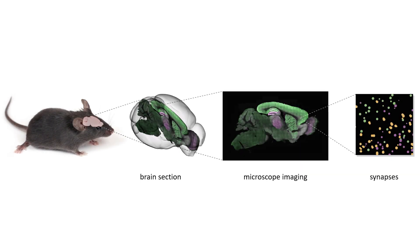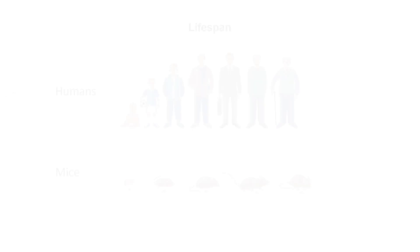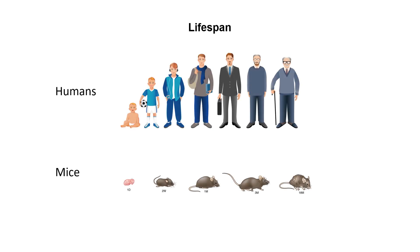To find the individual synapses, we take thin brain sections and image them with a microscope that reveals the synapses as small coloured dots. We have done this work in the mouse, which has a much smaller brain and a shorter lifespan than humans, but it is an excellent model of the human brain because all the fundamental features are the same.